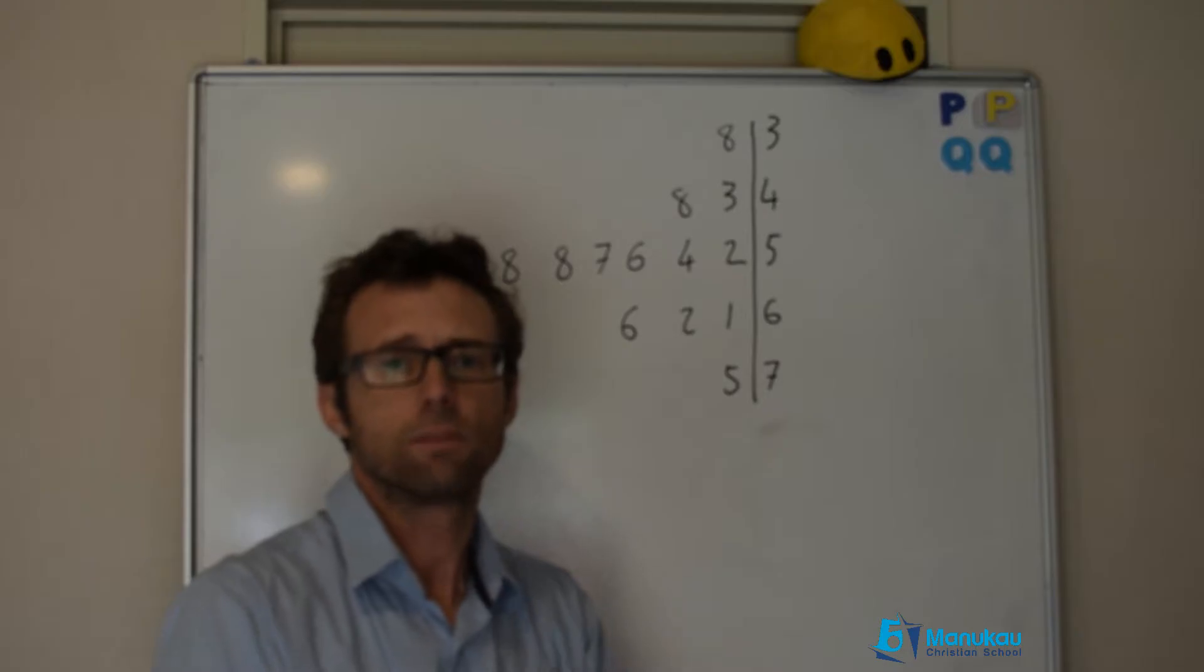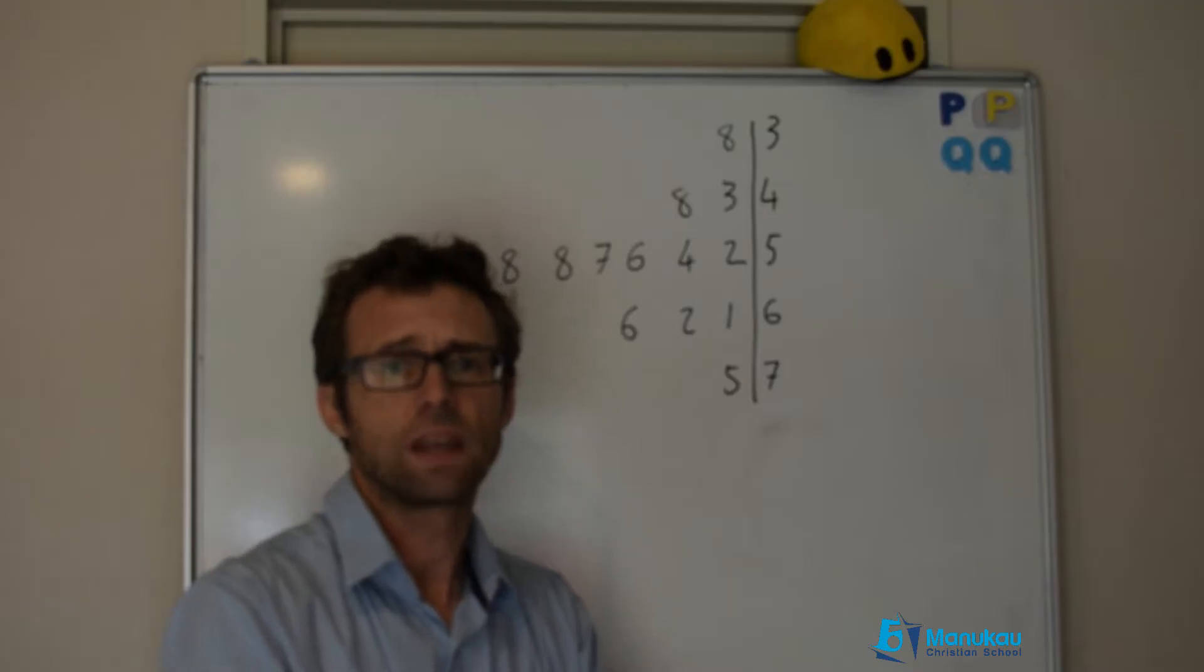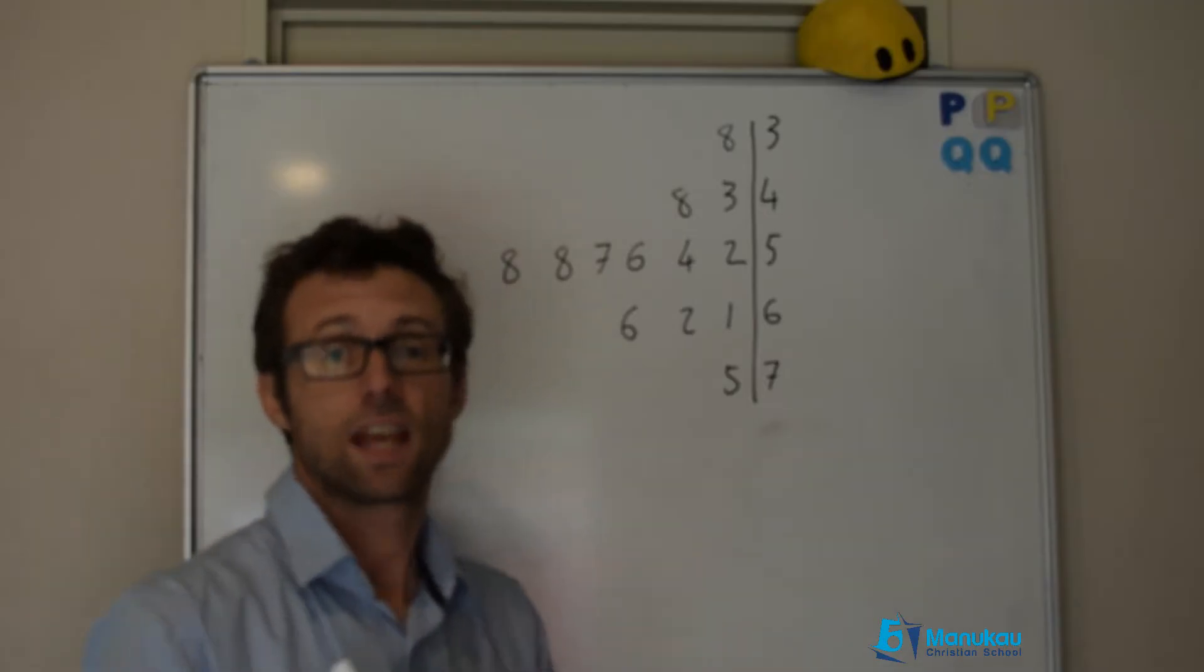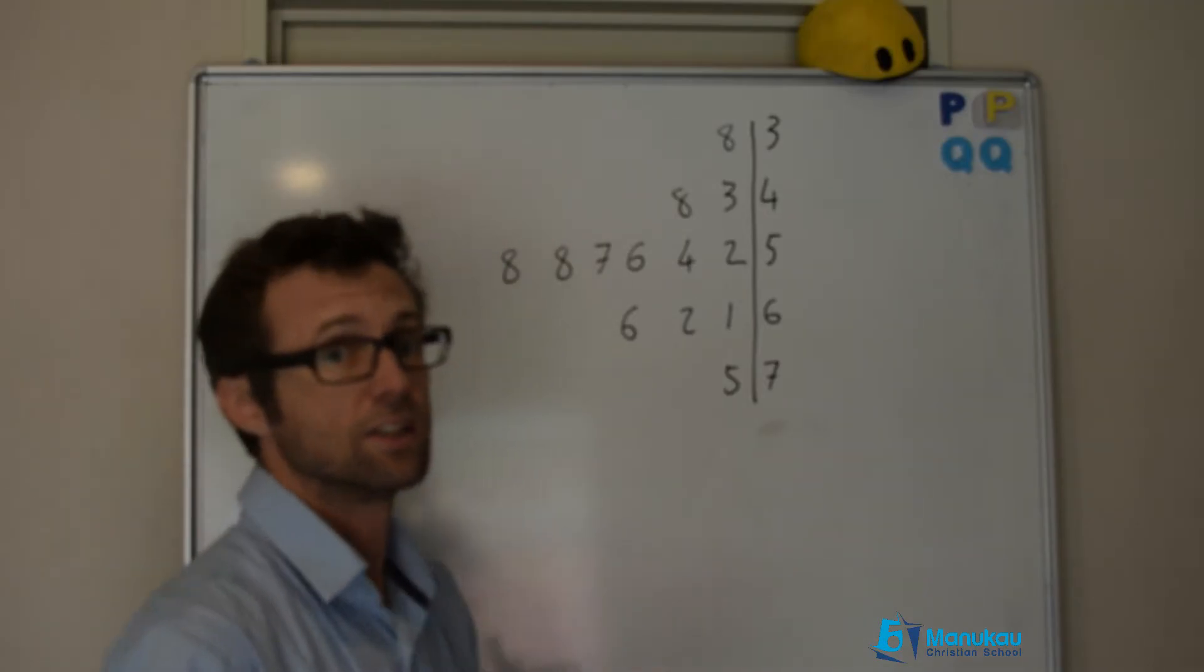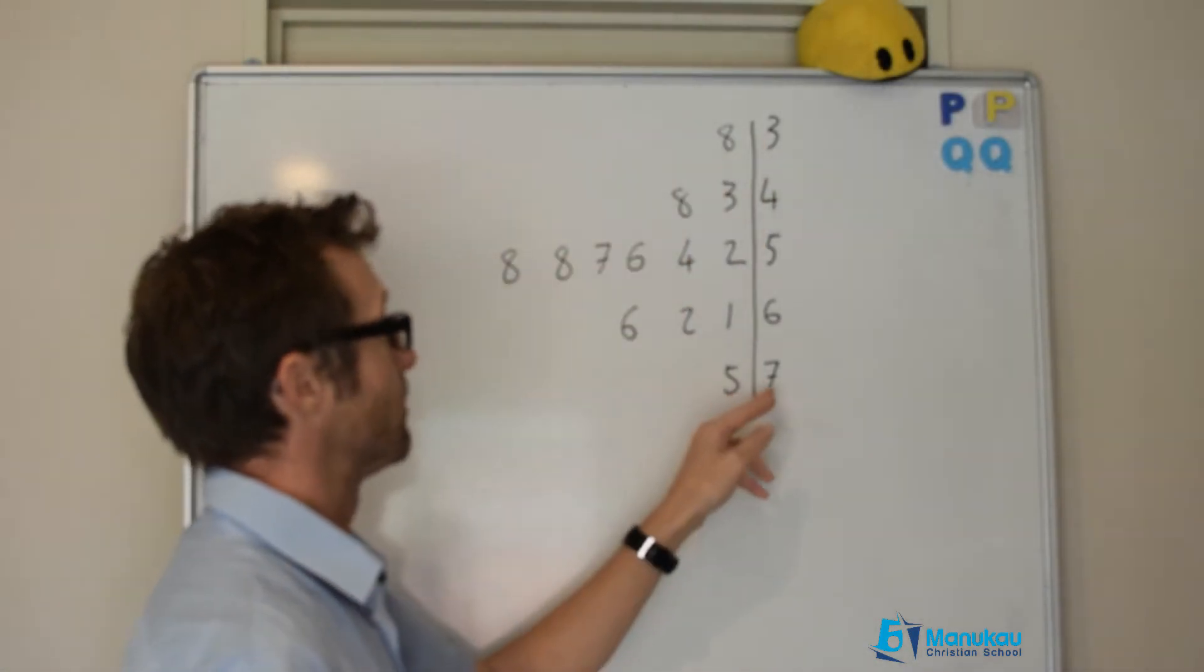However, it's important that we now learn how to do it the way we'll be expected to do it in Cambridge at the end of the year. So this is how we're going to do it. The first step is to count our items of data. We have 13, from 38 to 75.